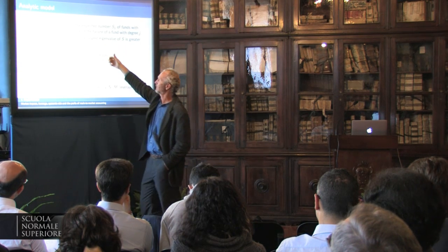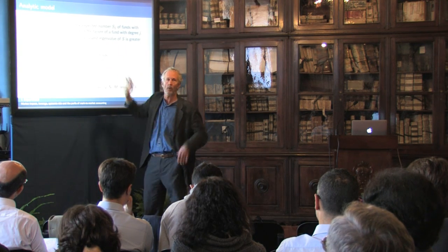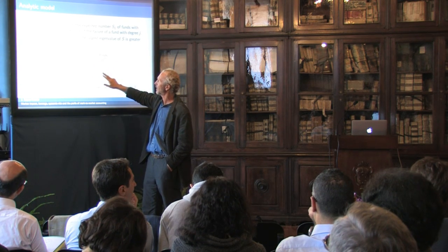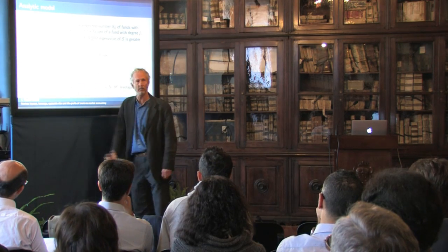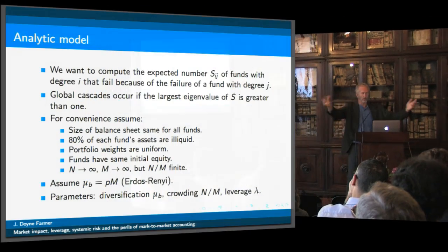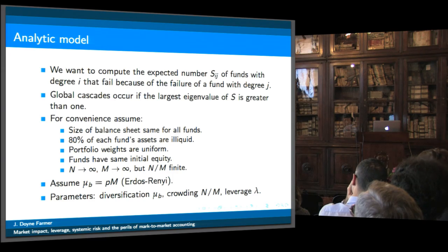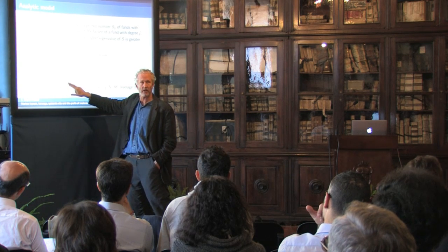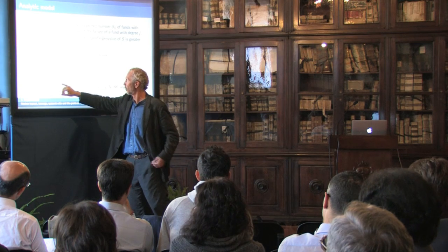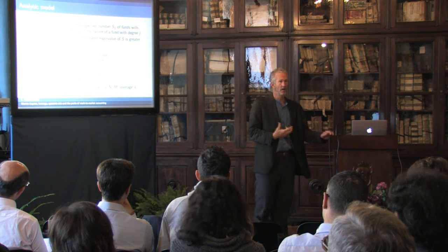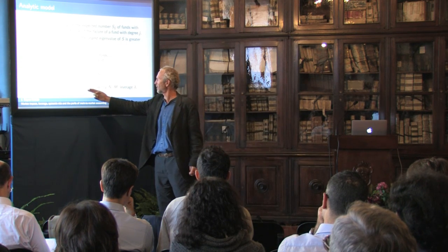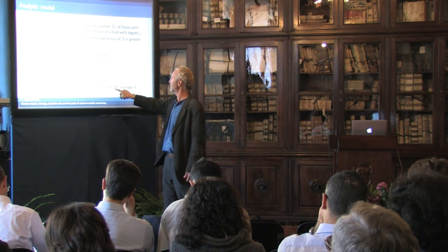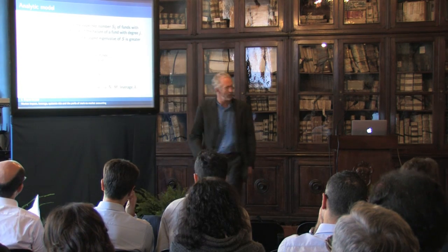For convenience we make some highly unrealistic assumptions: the size of the balance sheet is the same for all funds, all banks are the same size, 80% of each fund's assets are illiquid, the portfolio weights are uniform, funds all have the same initial equity. For the analytic calculations, we let N and M go to infinity because the eigenvalue instability is only defined in the infinite limit. We also assume an Erdős–Rényi graph by assuming a random probability that a given bank is connected to a given asset. This parameter is effectively the diversification parameter — how many assets each bank holds.